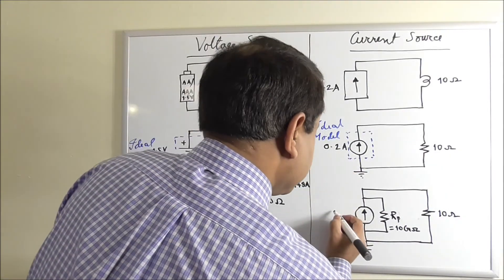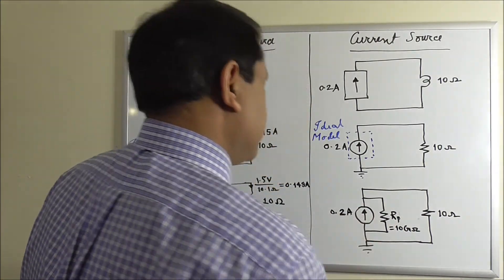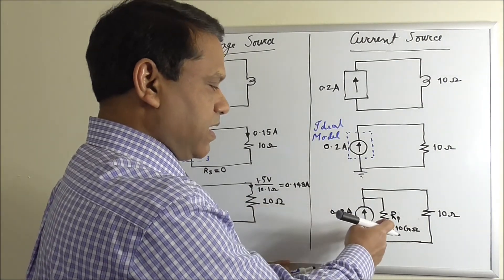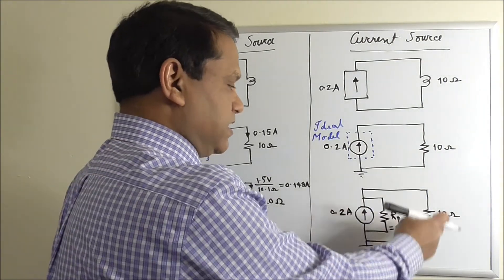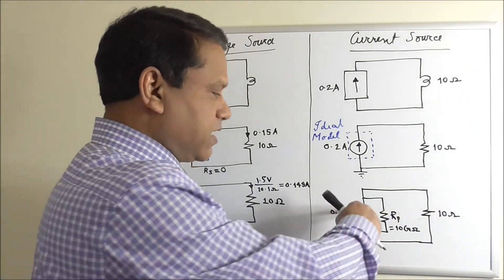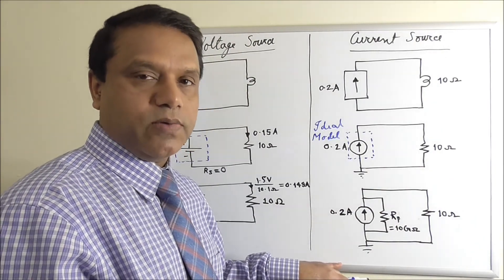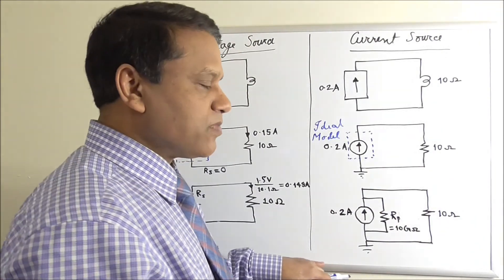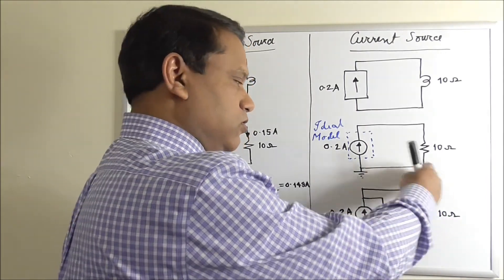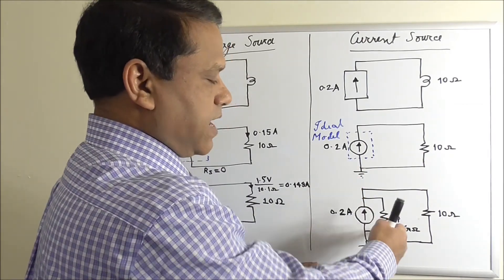So what will happen, this current 0.2 ampere has two ways to come back to the source. It can come through this parallel resistance or the load resistance. And this is much smaller. So most of the current will go through the load resistance. If we use current divider rule that we have learned in a previous video, you can find out the current. Almost all of this 0.2 ampere current will go through this, and very small fraction will go through this high resistance.